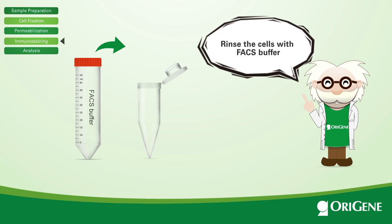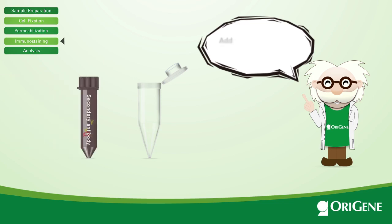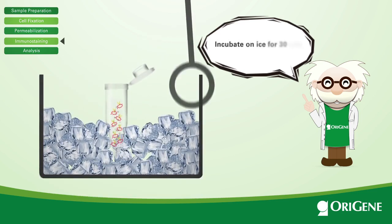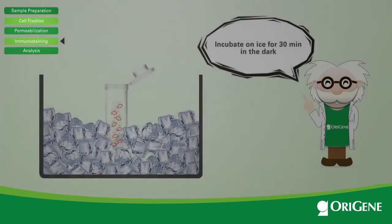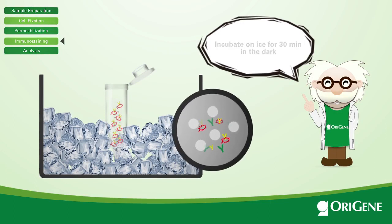If your primary antibody is directly linked to a fluorochrome, you can skip this step. Otherwise, resuspend the cells in your fluorescent dye-conjugated secondary antibody diluted to the appropriate concentration. Incubate on ice for 30 minutes in the dark. Wash the cells three times with FACS buffer.